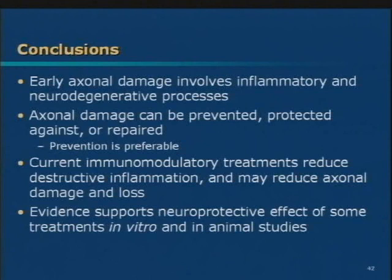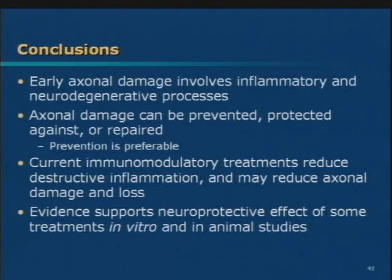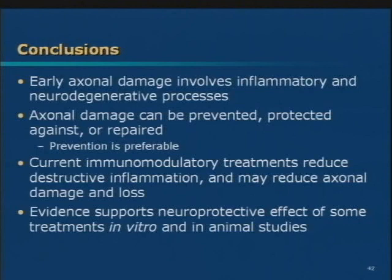The early axon damage involves inflammatory and neurodegenerative processes. The axon damage can be prevented and protected against, or maybe repaired — we're still working on that. Prevention is preferable; if you had your choice, you'd rather have something that cures the disease. The current treatments, which we call immunomodulators, don't typically suppress the immune system as much as they begin to restore this balance between attack and non-attack. If you suppress the immune system too much, you begin to get adverse events, infections, and other problems. There is evidence from MS, Parkinson's disease, Alzheimer's disease, and others that there are some neuroprotective effects that might be meaningful, not only in animal models but in humans.